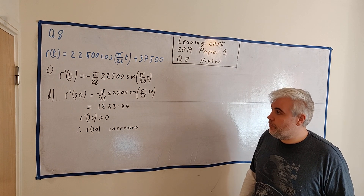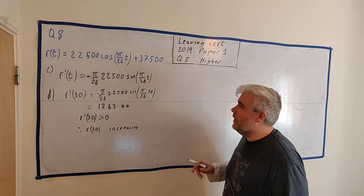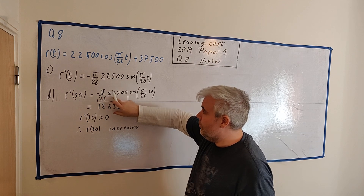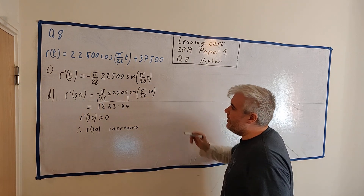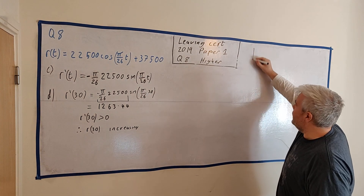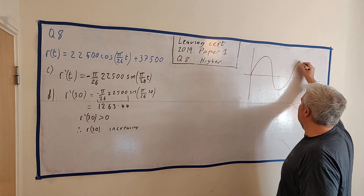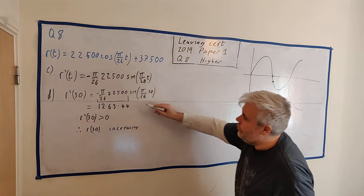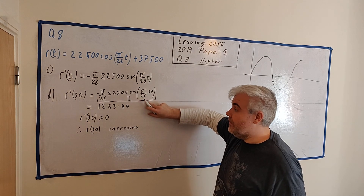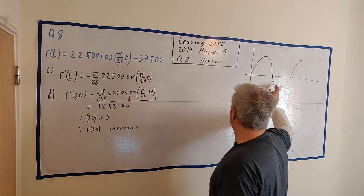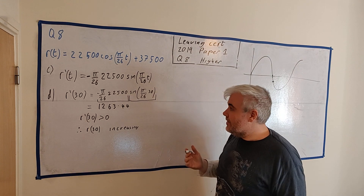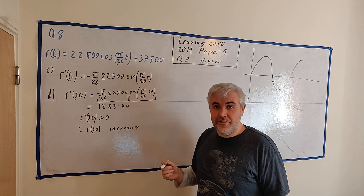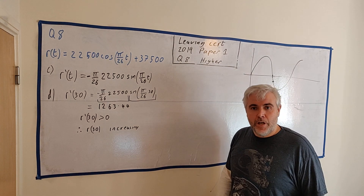There's another approach: note that the constant out front is negative, and sin(30π/26) — since 30/26 is just past halfway — is also negative. Negative times negative is positive, so R′(30) > 0. You could draw a quick sine graph and explain this in words; the examiner would like to see you justify it. Either method is fine since the question only asks whether revenue is increasing, not by how much.